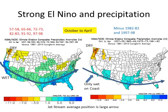In past strong El Niños, the jet stream dips across California into Texas and comes out across Florida. But when we remove those two big years — 1982-83 and 1997-98 — the signal of wet conditions across California diminishes significantly. It does hold together across the immediate coast of Southern California and across Arizona, Texas, and into parts of Florida.